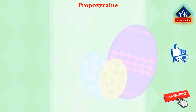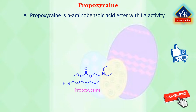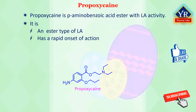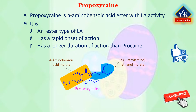The next drug is propoxicaine. Propoxicaine is chemically a para-amino-benzoic acid ester. It is an ester type of local anesthetic that has a rapid onset of action and a longer duration of action than procaine. Thus, it is a para-amino-benzoate, a dimethylamino-ethanol, and a propyl alcohol.